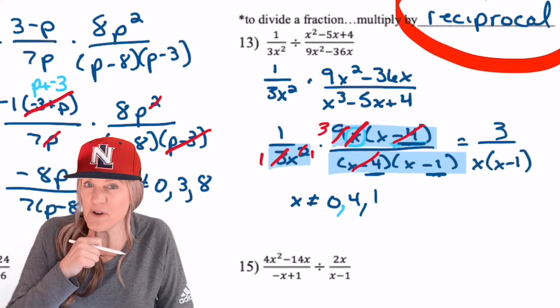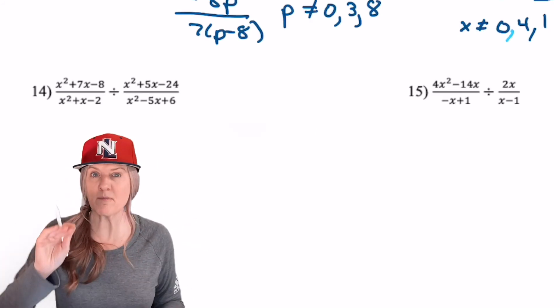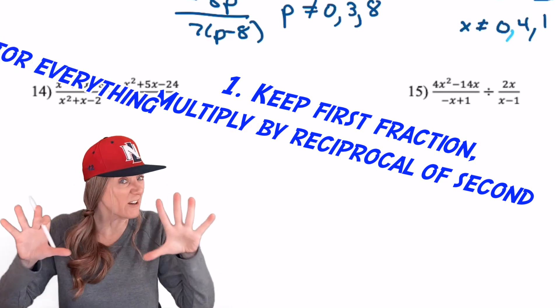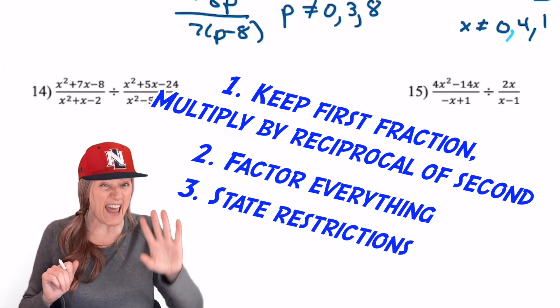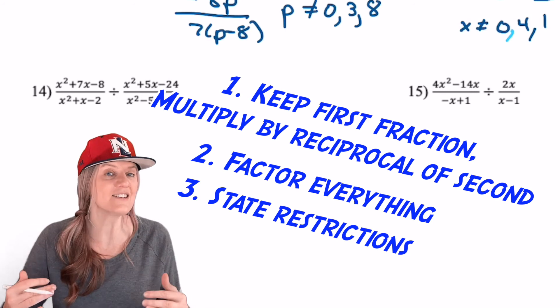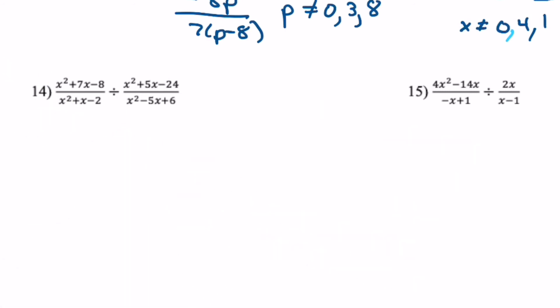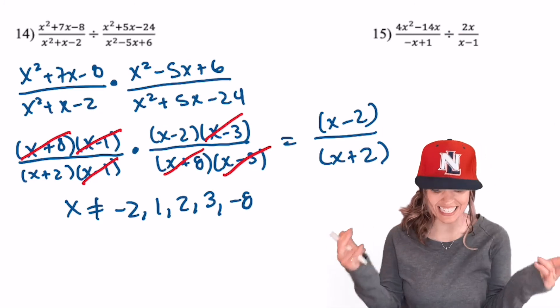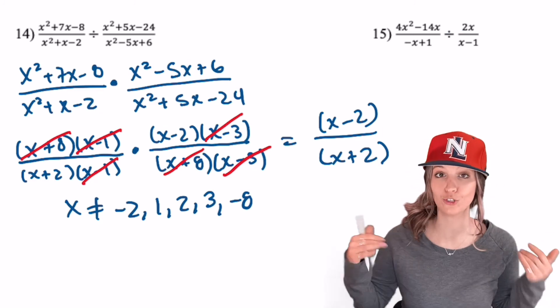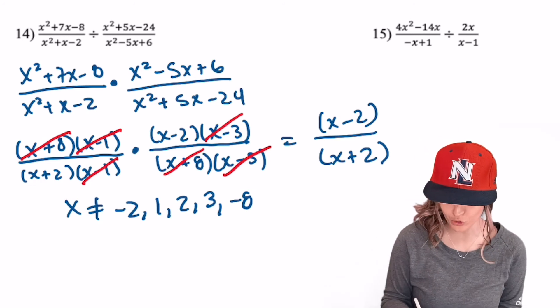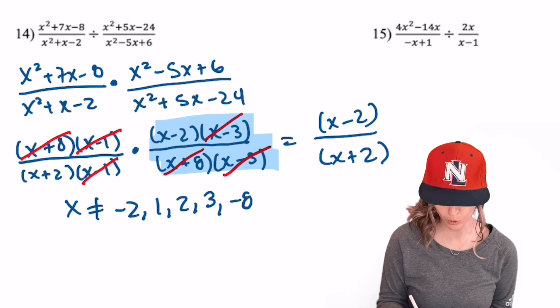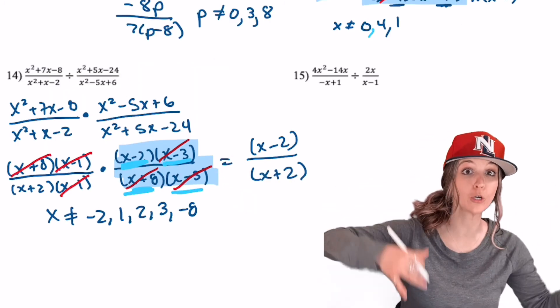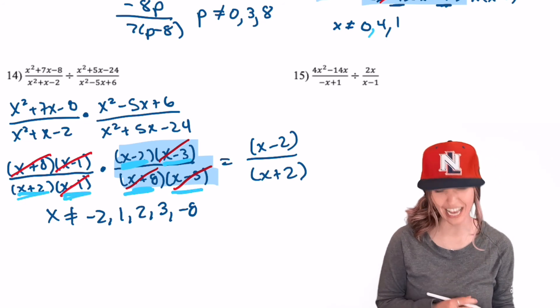Ready to try for your own home run? Look at that next problem. A lot of factoring has to go on. But remember the steps. Keep the first fraction. Multiply by the reciprocal of the second fraction. Factor everything. State your restrictions. Remember to include everything from the second fraction and then divide out and simplify. Check it out. Did you get that home run? This simplifies to x minus 2 divided by x plus 2. But wait, did you get all the restrictions correct? Remember, you have to restrict the entire second fraction. So that means we were restricting x equals 2, x equals 3, x equals negative 8, and x equals 3 again. And we have to restrict the denominator in the first fraction. So that means we have to restrict x equals negative 2 and x equals 1.